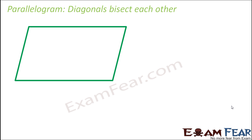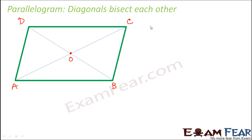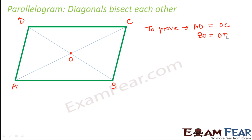Let us move on to the fourth property: diagonals bisect each other. We consider parallelogram ABCD and draw both diagonals, marking the point where they meet as point O. We want to prove that AO is equal to OC and BO is equal to OD - meaning each diagonal is divided into two equal halves. We consider triangle AOD and triangle BOC, labeling angles 1, 2, 3, and 4.